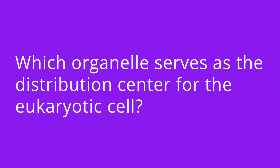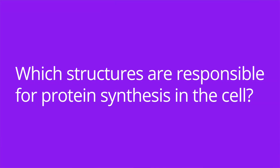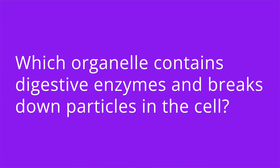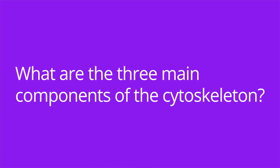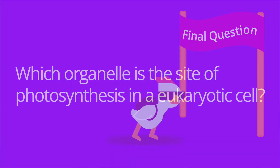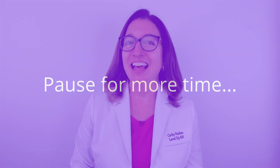All right, it's quiz time, and I have five questions for you. Question number two: which structures are responsible for protein synthesis in the cell? The answer is ribosomes. Number three: which organelle contains digestive enzymes and breaks down particles in the cell? The answer is a lysosome. Number four: what are the three main components of the cytoskeleton? The answer is microfilaments, intermediate filaments, and microtubules. Number five: which organelle is the site of photosynthesis in a eukaryotic cell? The answer is the chloroplast.